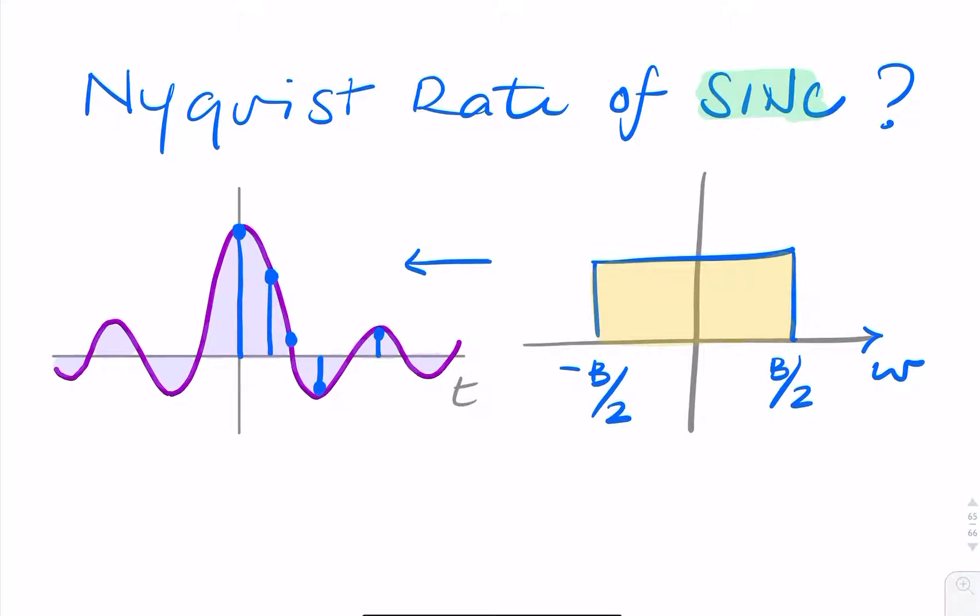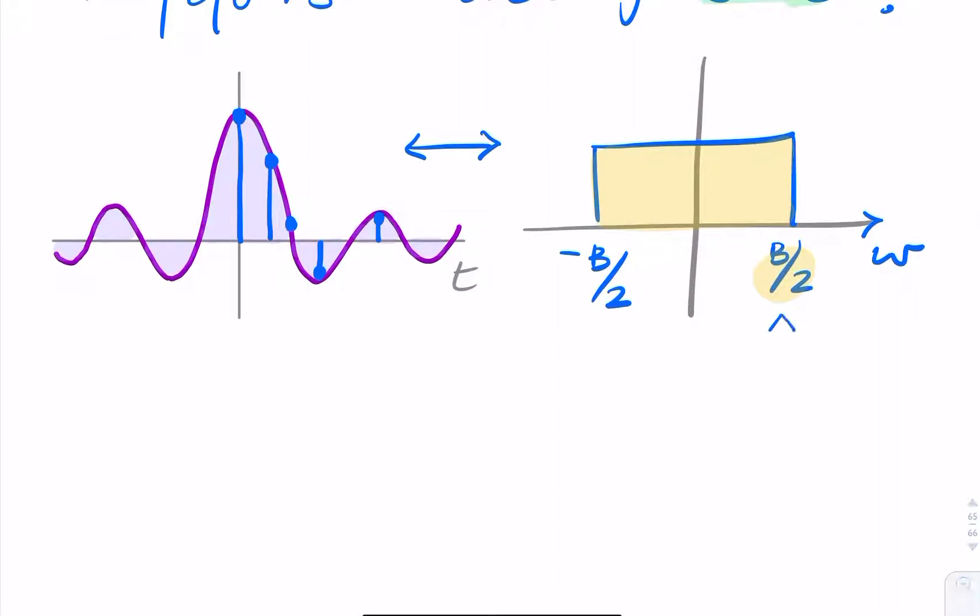So if these two form a Fourier pair, then to find the Nyquist rate, what we should be looking at is B over 2, and then doubling that. So this is the bandwidth or the highest frequency in a SYNC function.